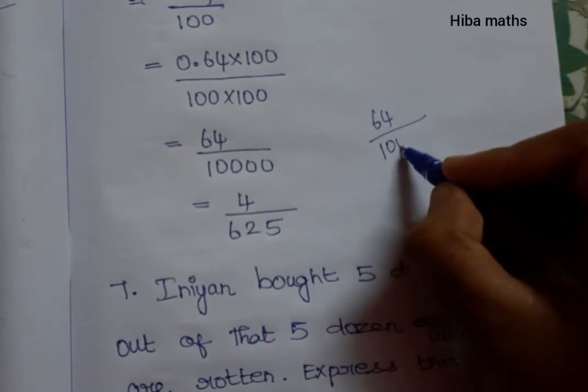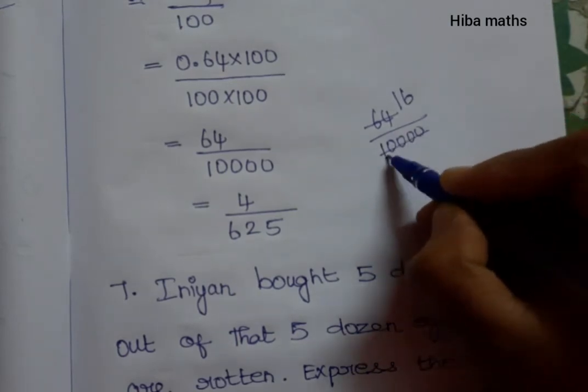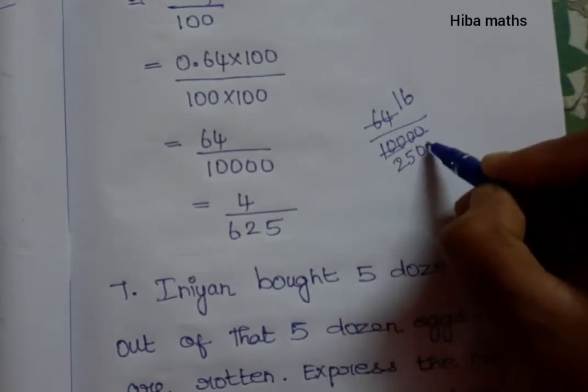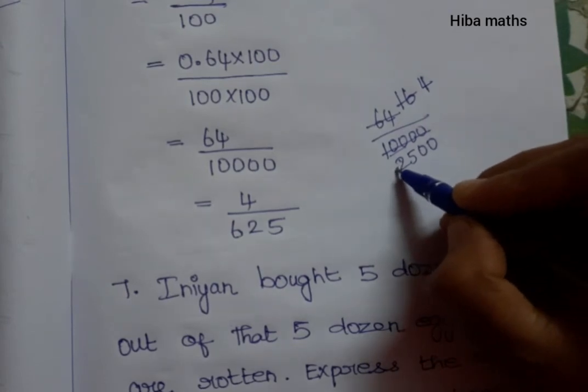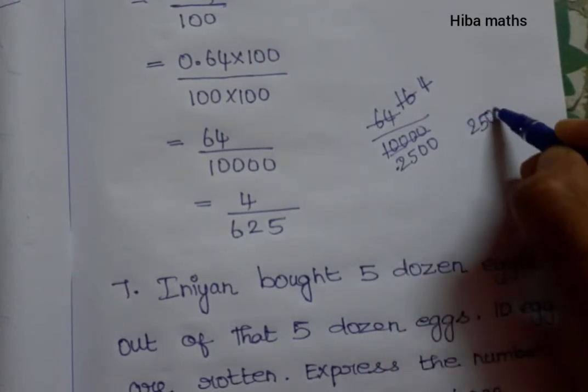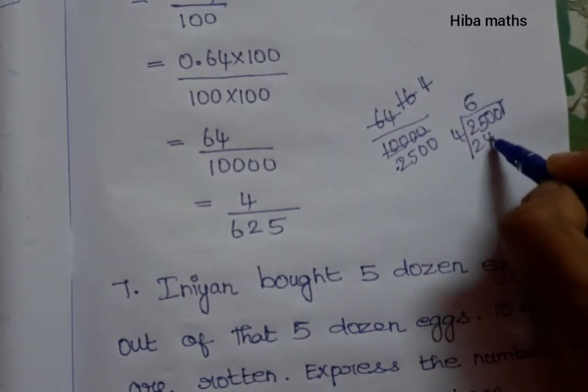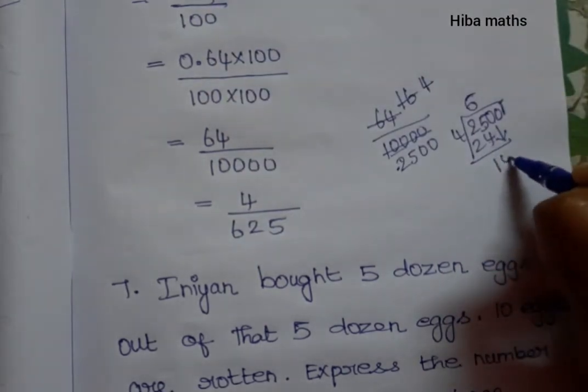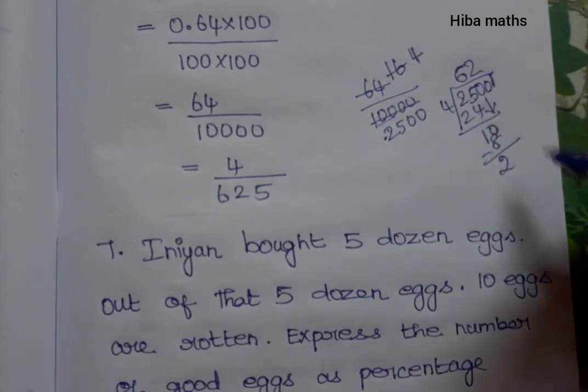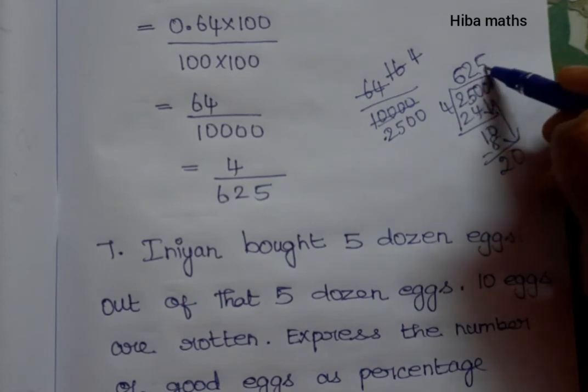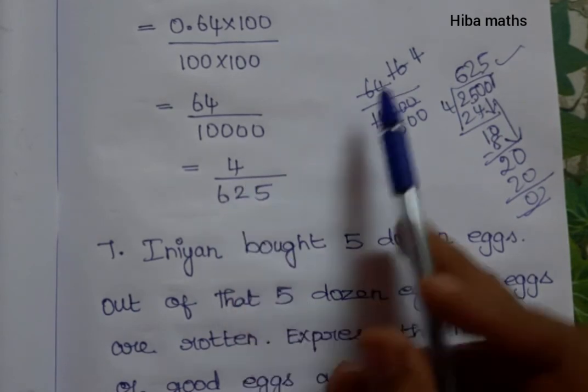64 divided by 4 is 16, and 10000 divided by 4 is 2500. We can divide by 4 again: 4 goes into 16 four times, giving us 4. For the denominator, 4 goes into 25 six times (4 sixes are 24), leaving 1. Bring down 0: 4 goes into 10 twice (4 twos are 8), leaving 2. Bring down another 0: 4 goes into 20 five times exactly. The final answer is 4 over 625.